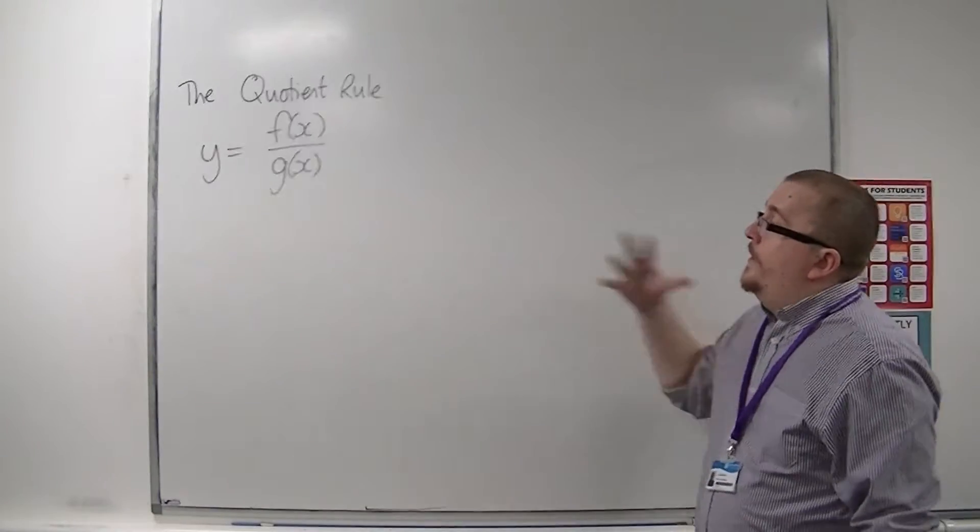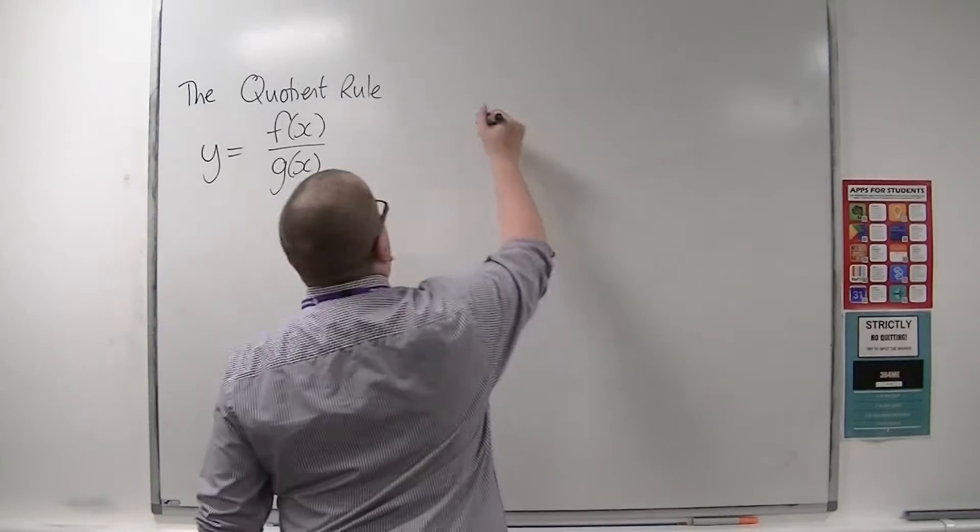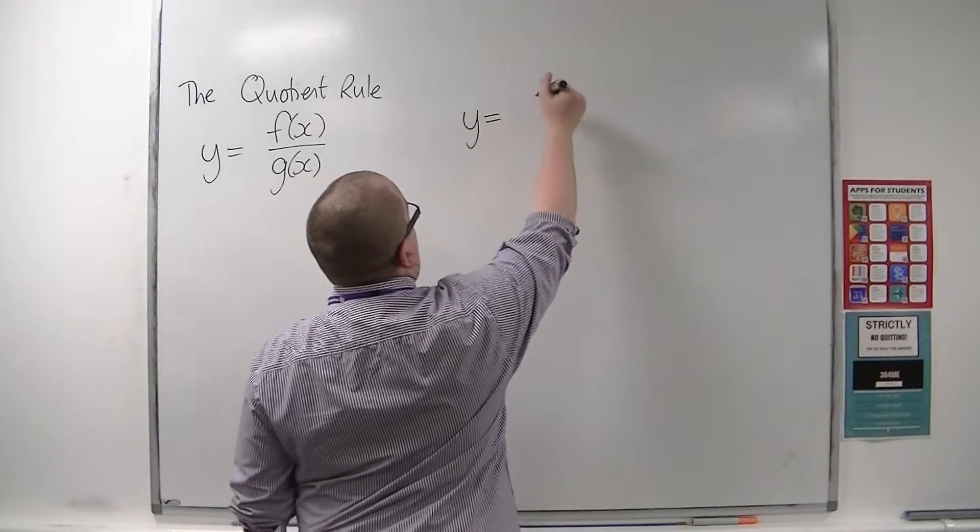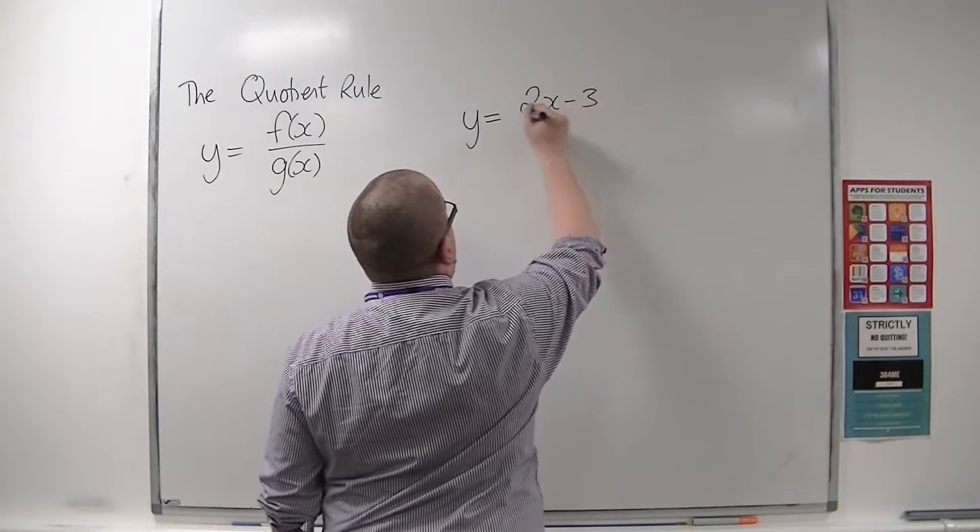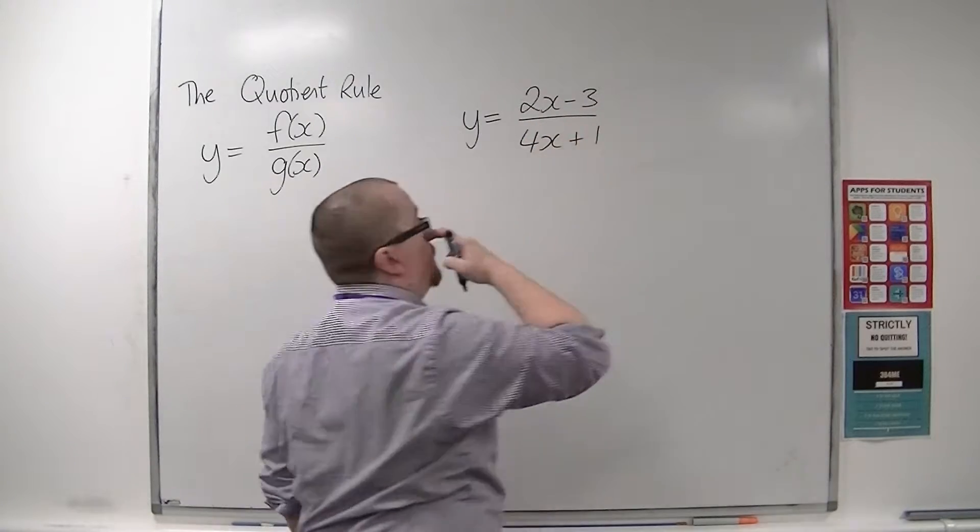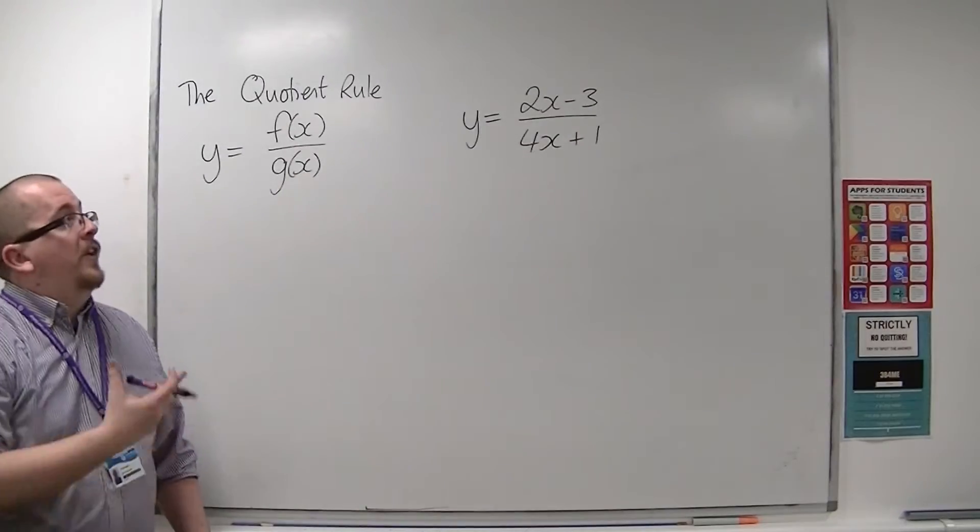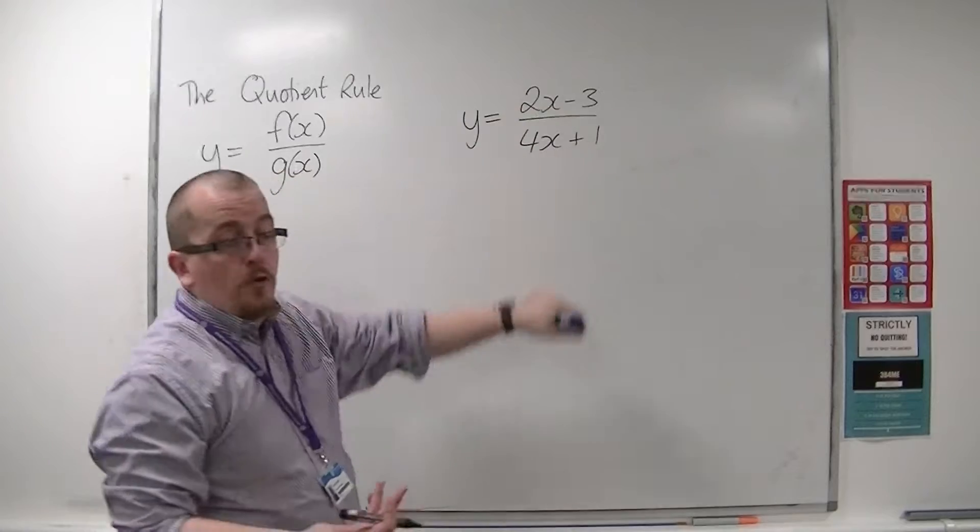This will enable us to differentiate things like y equals 2x minus 3 over 4x plus 1. So this is a quotient of two functions: 2x minus 3 and 4x plus 1.